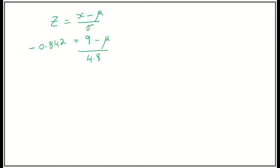So, what I need to do now is I want to move the fraction. So, this divided by 4.8, the opposite of dividing is to multiply. So, I'm going to do negative 0.842 times 4.8 is equal to 9 minus the mean.